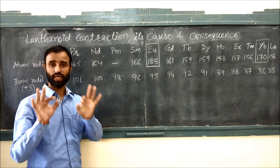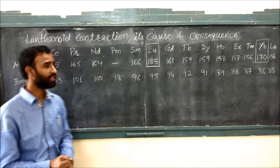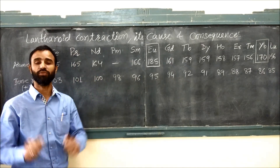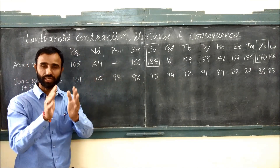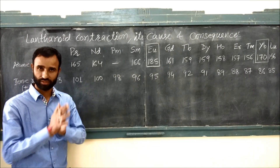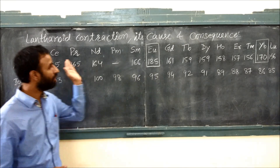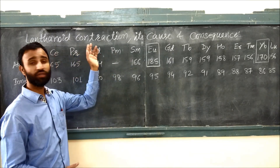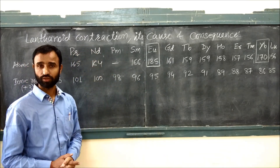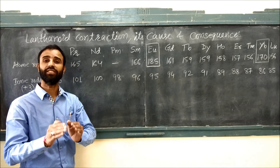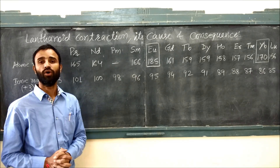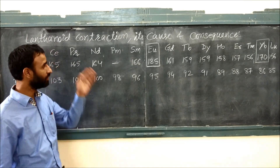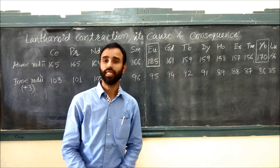So first, what is lanthanoid contraction? As the name suggests, contraction means decrease in size among lanthanoids. If we define lanthanoid contraction, it is a steady decrease in size of lanthanoids as their atomic number increases.